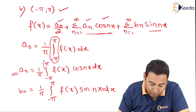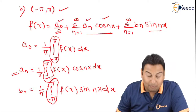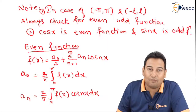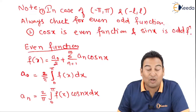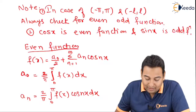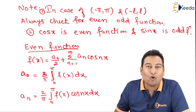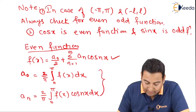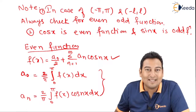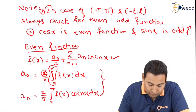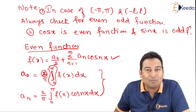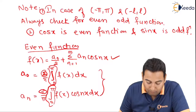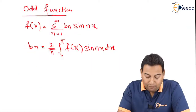Here the only difference is the limits are minus π to π. Friends, remember: whenever we get minus π to π or minus l to l, always check for even or odd function. I have given you the tricks on how to check even/odd. Whenever you get an even function — cos is even — the cos term will be there, and a₀ will be there in the formula. We need to find a₀ and aₙ. Since it is even, the formula will be twice the integral from 0 to π. If it is normal it is (1/π) from minus π to π, but if it is even or odd it is twice from 0 to π.